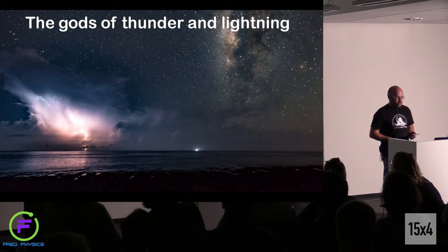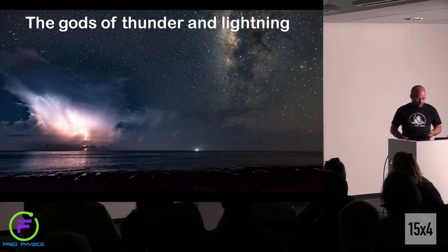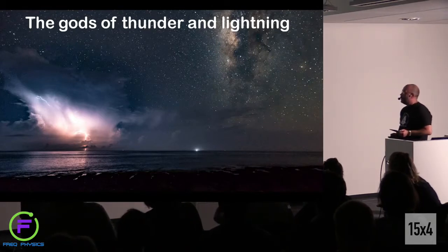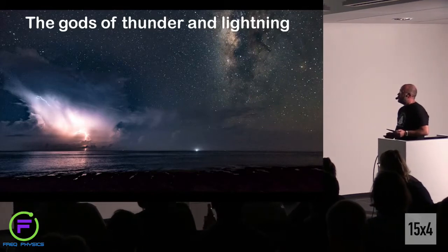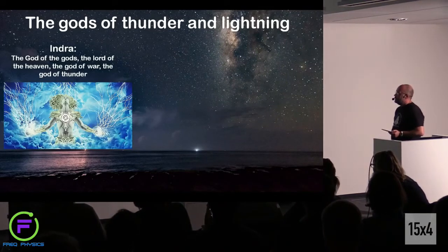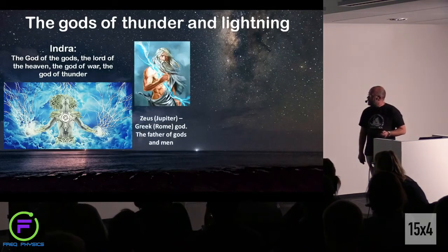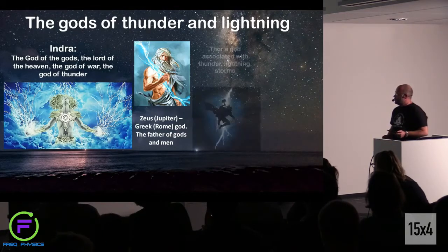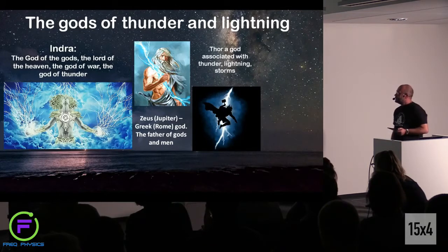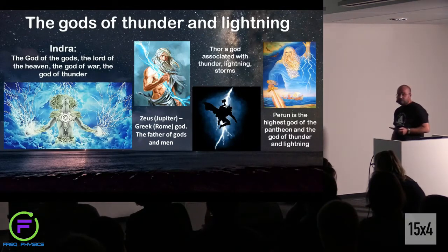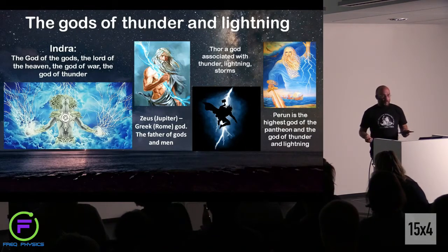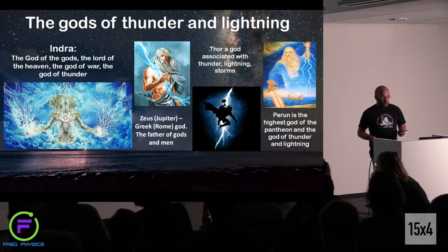From ancient times, lightning was associated with power. Therefore the most powerful gods were gods of thunder and lightning: Indra in India, Zeus in Greece, Jupiter in Rome, Thor in Scandinavian countries, and Perun in Slavic countries. But now we know that it is not the power of gods — this is a natural phenomenon associated with ordinary meteorological processes.